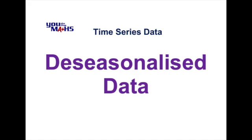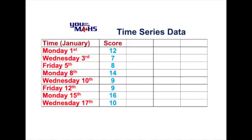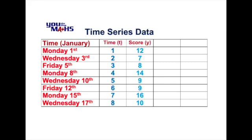In this video we have a look at how to de-seasonalize time series data. We've got a table of data based on parcel deliveries through Monday, Wednesday and Friday of each week. To make analysis easier, we'll use two numerical columns: the scores, and a time column expressed purely numerically, so Monday, Wednesday and Friday of the first week are represented by t equals 1, 2 and 3. Now, to understand what de-seasonalized data means, it's easiest to look at the graph of the scores in our table.